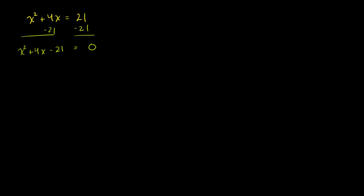So how do we factor this? We have to figure out two numbers whose product is equal to negative 21 and whose sum is equal to 4. Since their product is negative, they have to be of different signs. The numbers that work are positive 7 and negative 3: their product is negative 21, and their sum is positive 4.